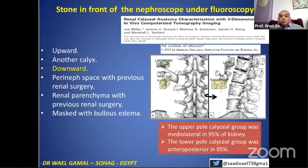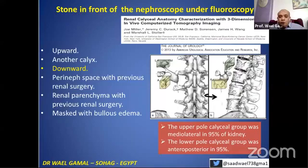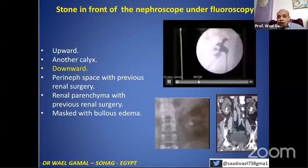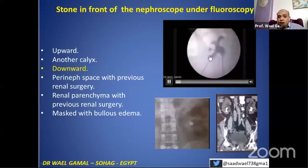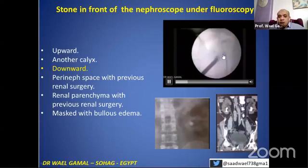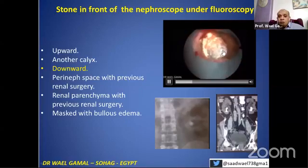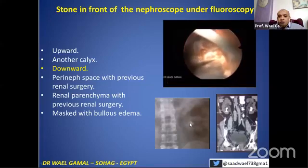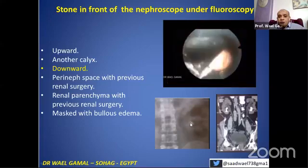It is very important to know the anatomy. The anatomy of the lower calyx and the upper calyx differ: the upper calyx is mediolateral, but the lower calyx is anteroposterior. So there is a stone in the lower calyx. We did this access. Unfortunately, the radiologist told me it is a single stone. We dilate, enter inside, and disintegrate the stone as it appeared to be a single stone. The stone is disintegrated and extracted, and we are about to finish.